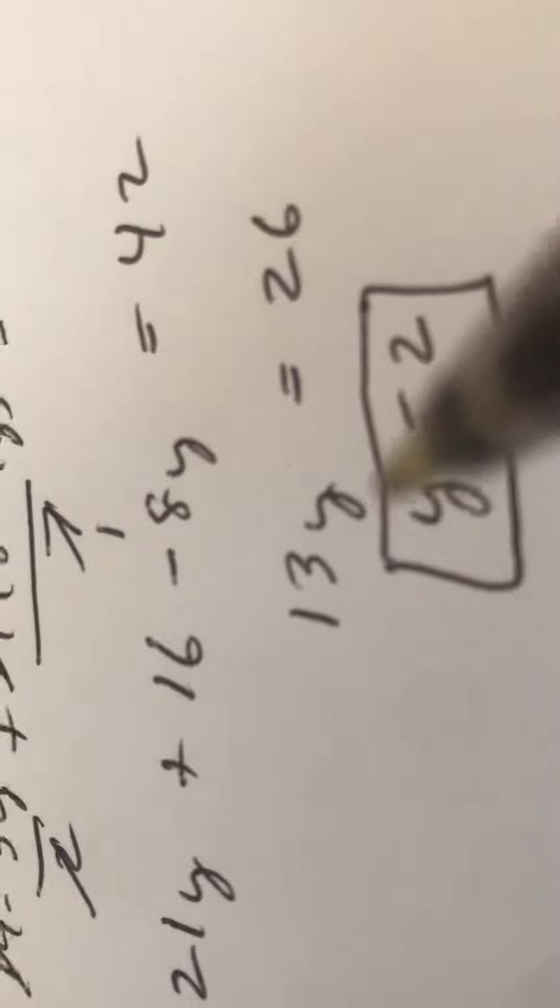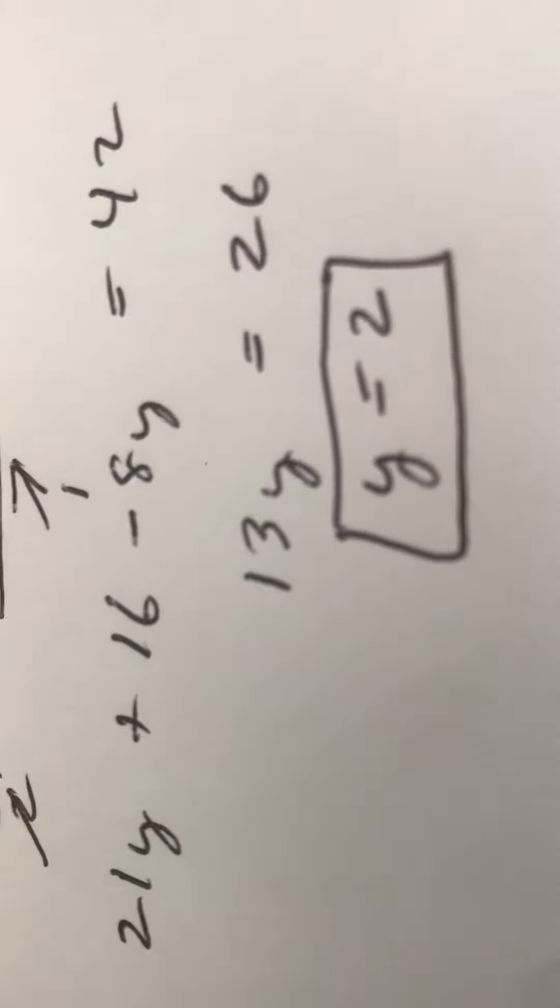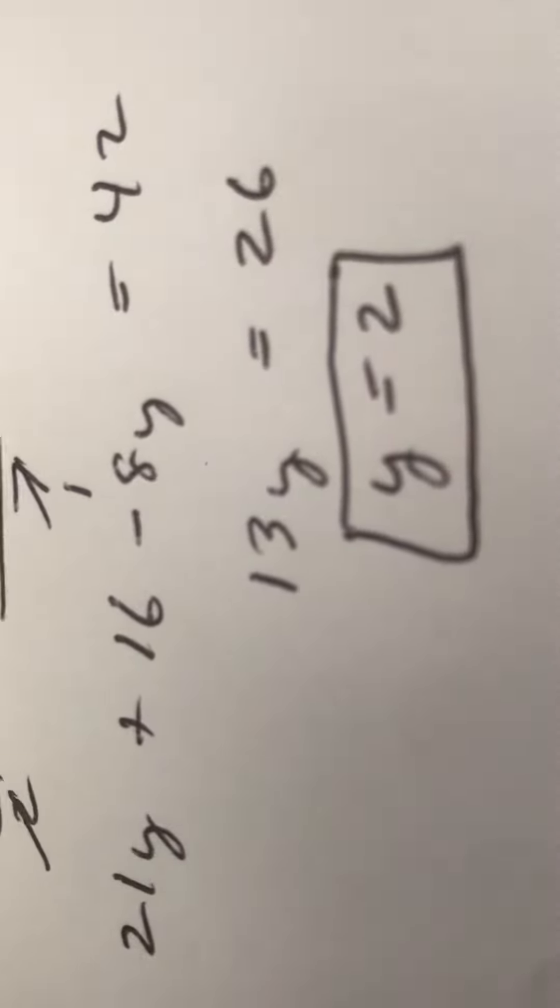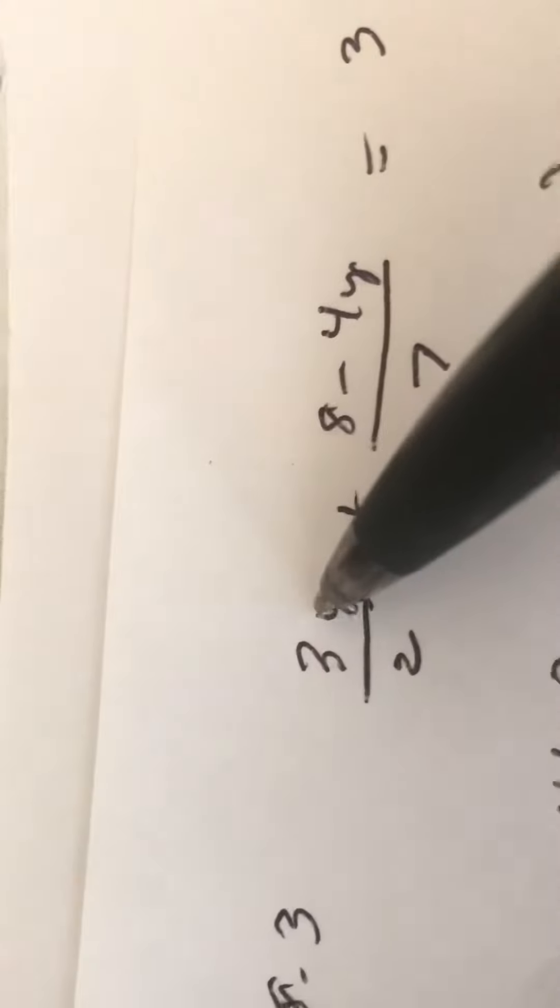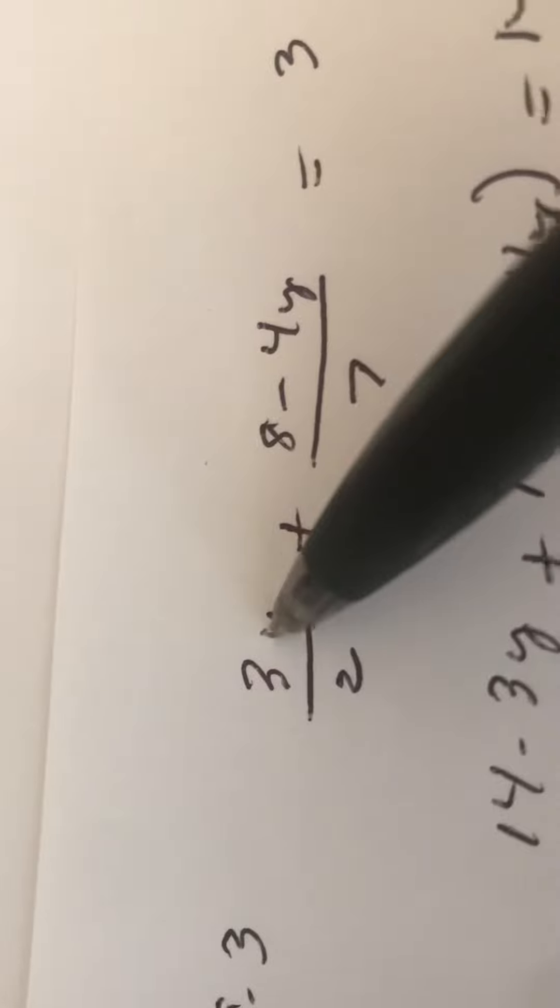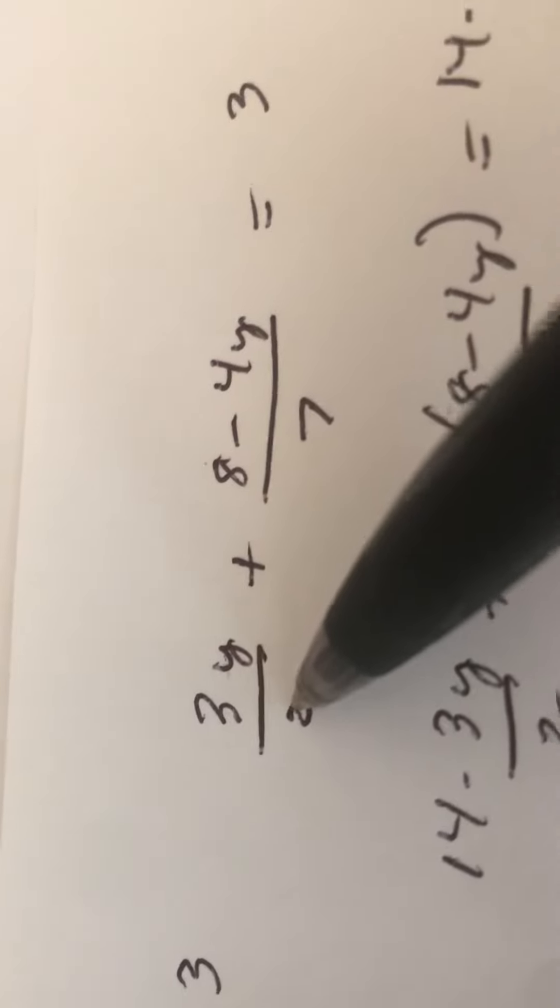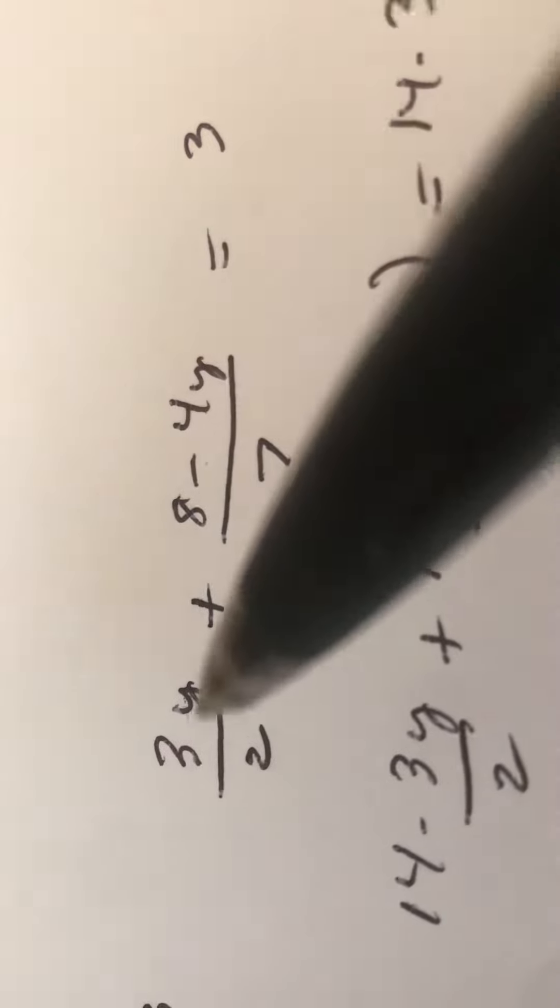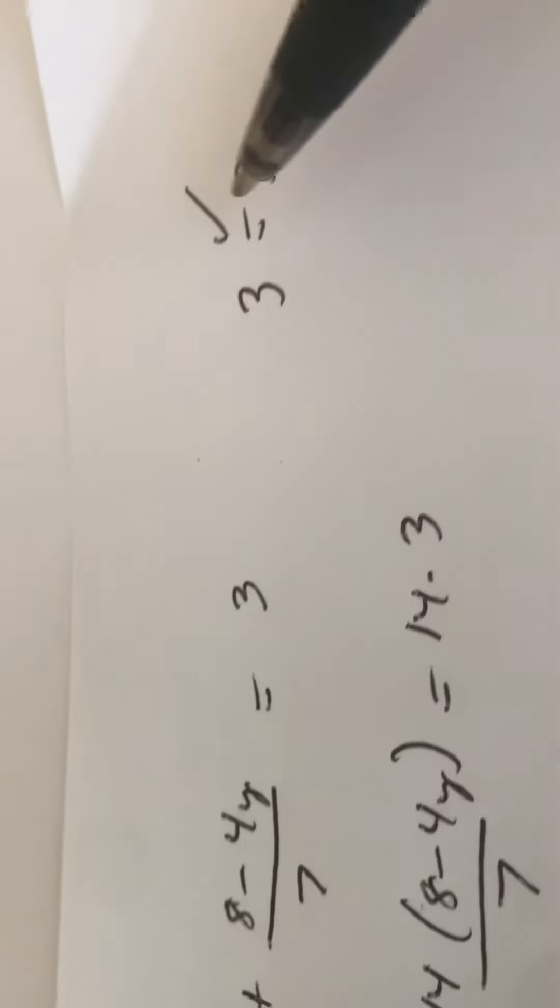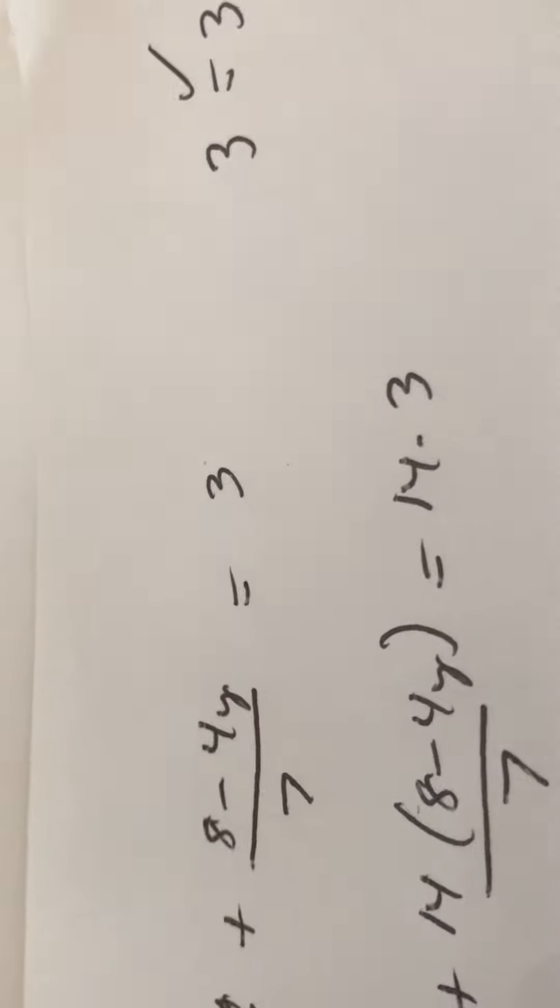Divide both sides by 13, y equals 2. Now one of the nice things, remember, with equations you can check your work. Plug 2 into the original. 3 times 2 times 2 is 6, 6 over 2 is 3. 4 times 2 is 8, 8 minus 8 is 0, so 3 equals 3. I know I'm right.